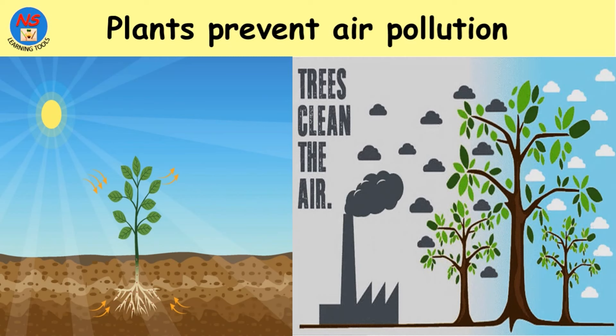Plants prevent air pollution. Plants purify the polluted air and produce fresh oxygen in the environment. These pollutants are absorbed by the leaves and plant surface, which then filter them out of the air.